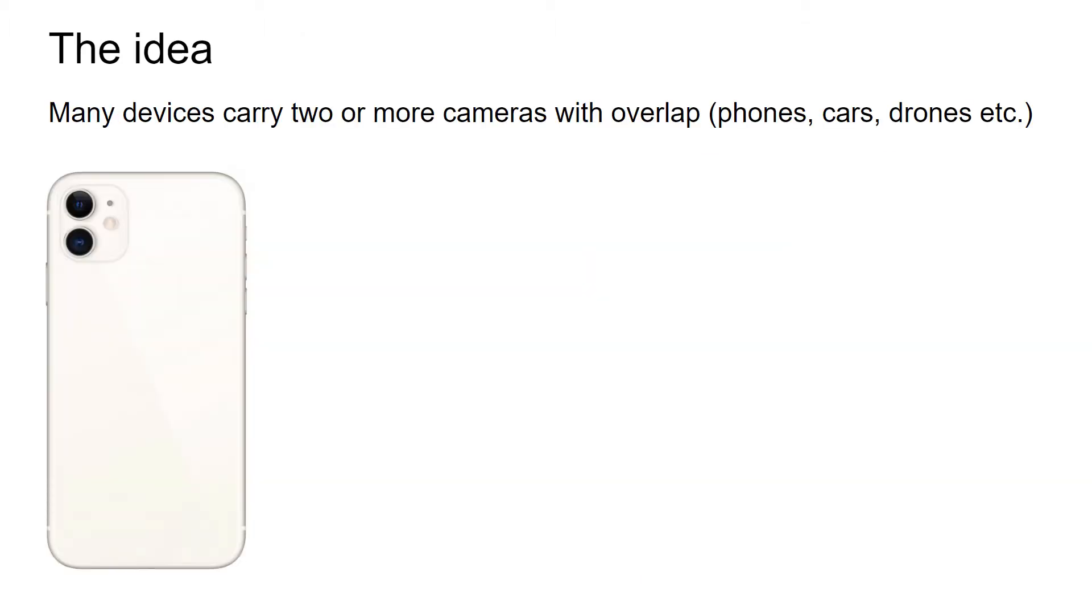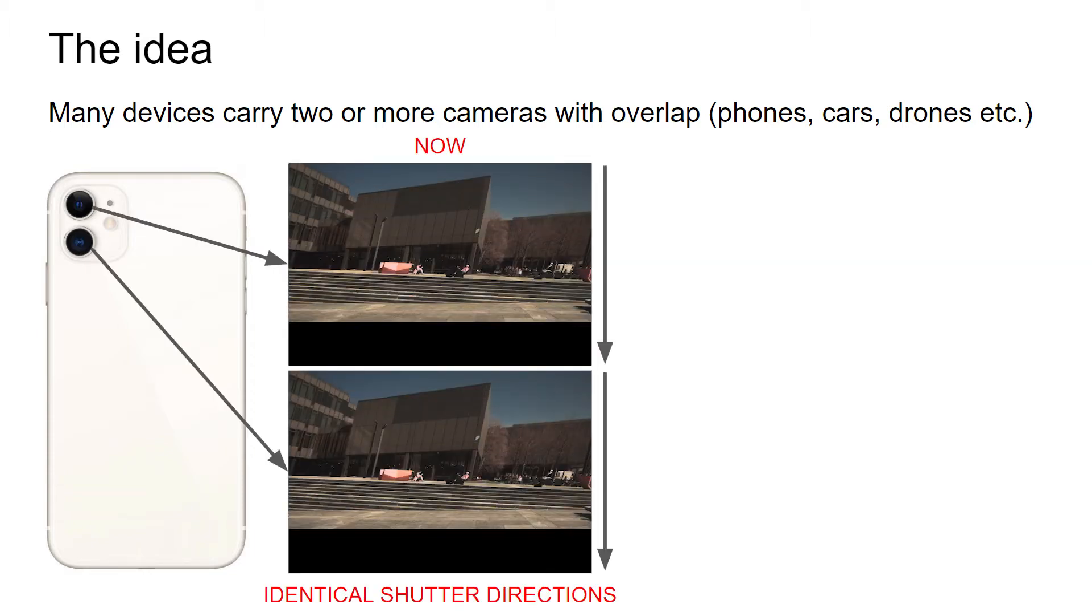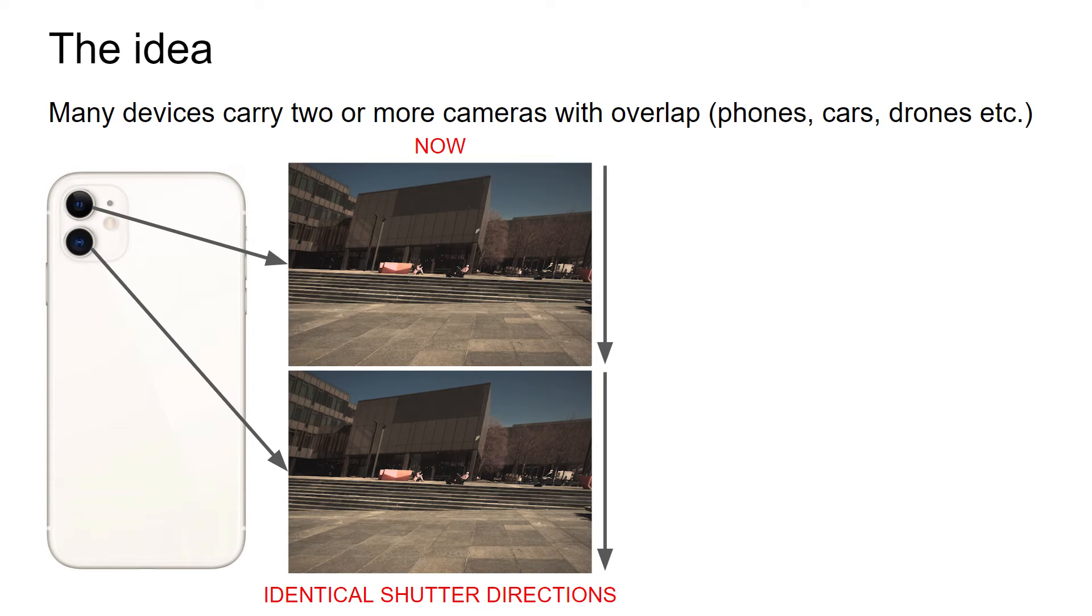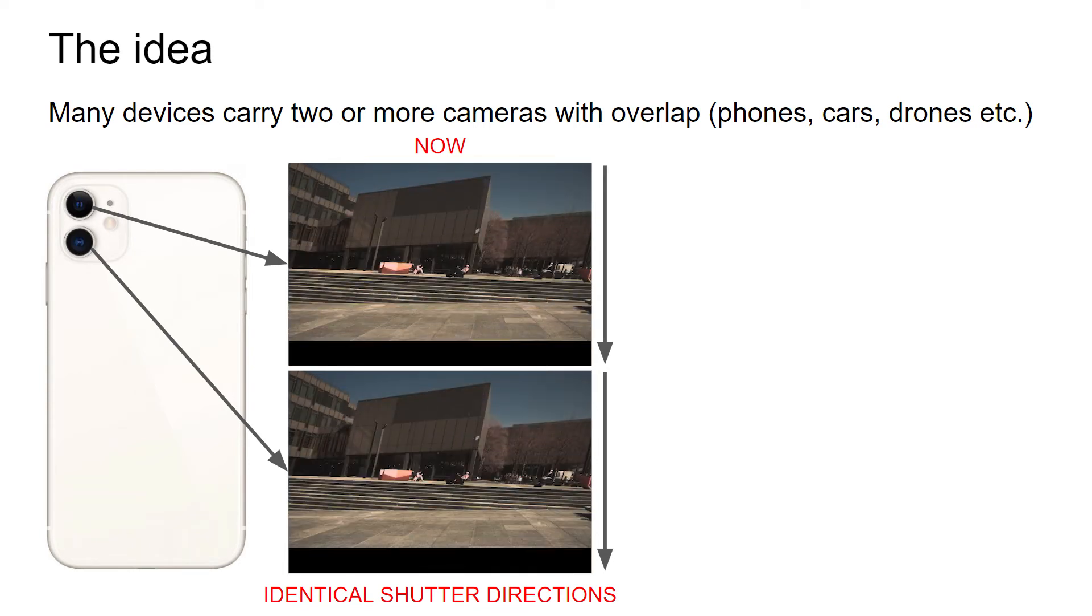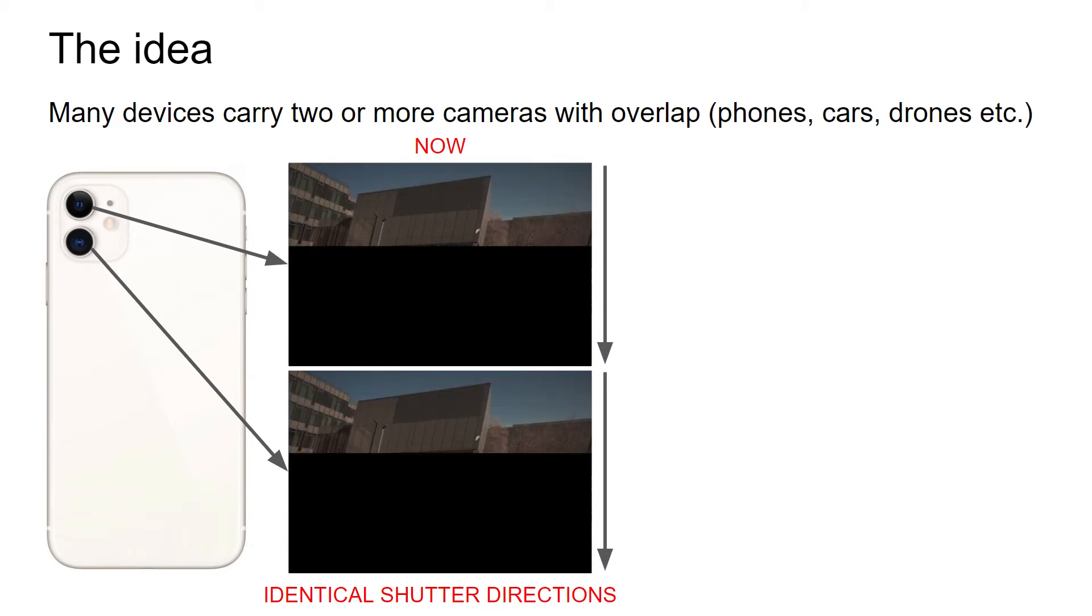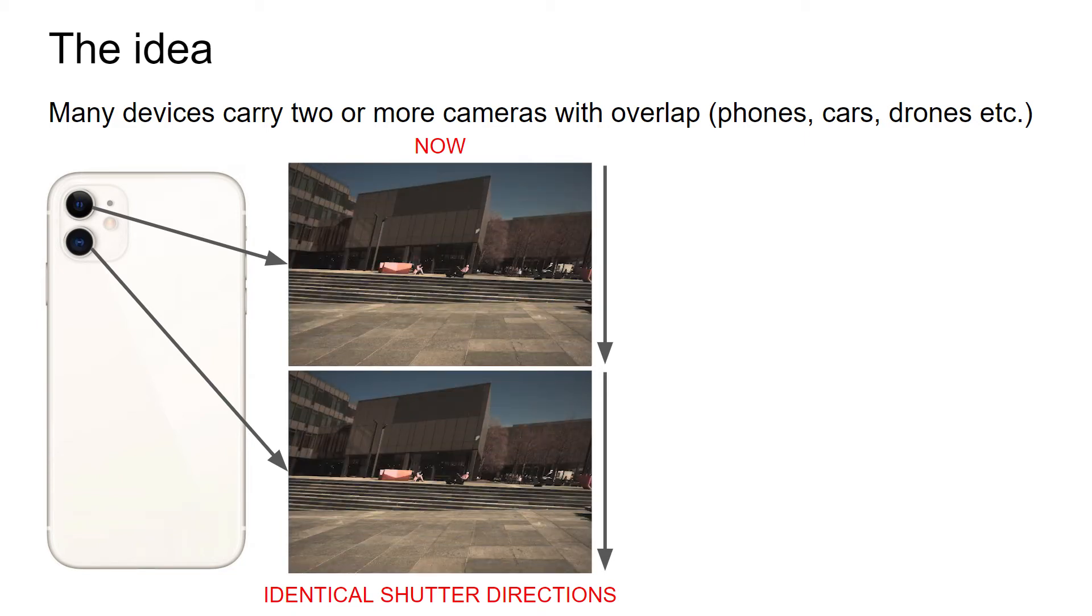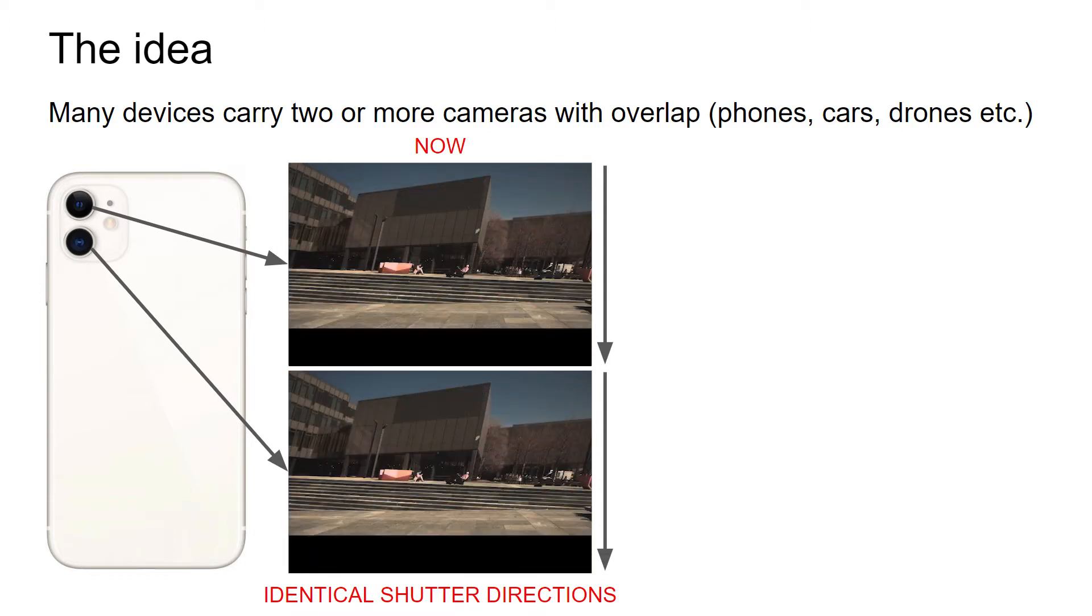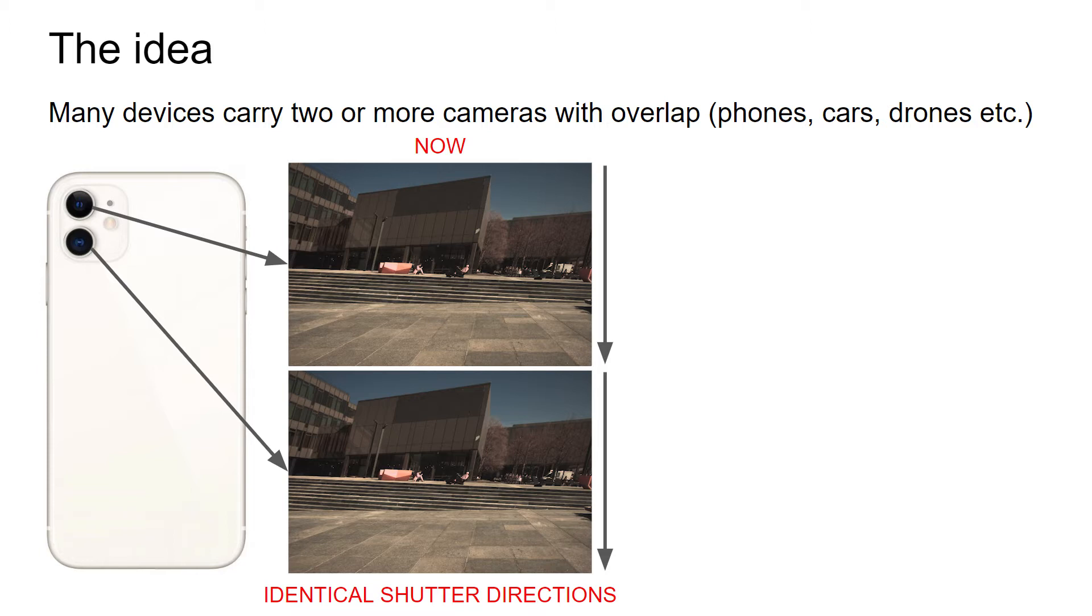The core idea for the camera configuration comes from the fact that many devices, most prominently smartphones, come with two or more rolling shutter cameras. When such cameras capture images while the device is moving, the images become distorted, which causes visual as well as computational issues. The common characteristic until now is that all the cameras scan the image in the same direction, for example from top to bottom. This causes the distortions induced by the motion to look the same.